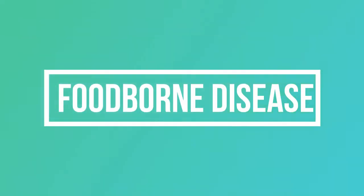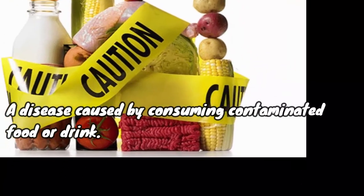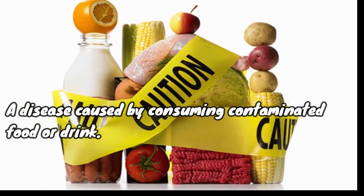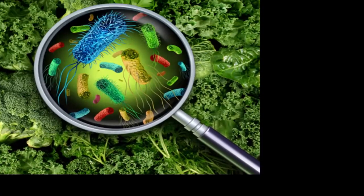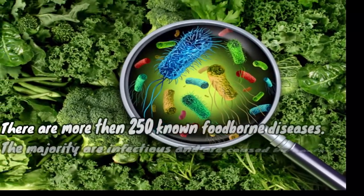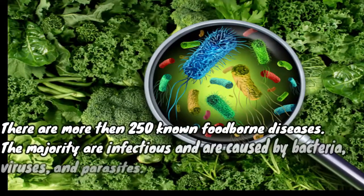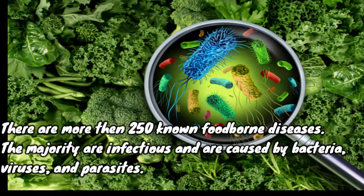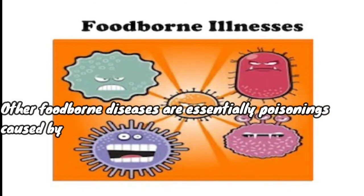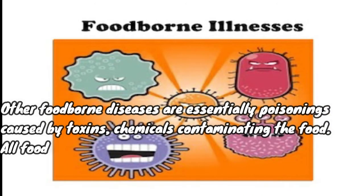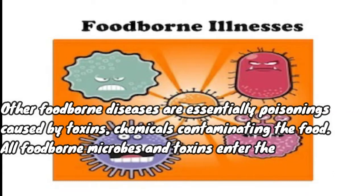Today's topic: foodborne diseases. A foodborne disease is a disease caused by consuming contaminated food or drink. Myriad microbes and toxic substances can contaminate foods. There are more than 250 known foodborne diseases. The majority are infectious and are caused by bacteria, viruses, and parasites. Other foodborne diseases are essentially poisonings caused by toxins or chemicals contaminating the food.